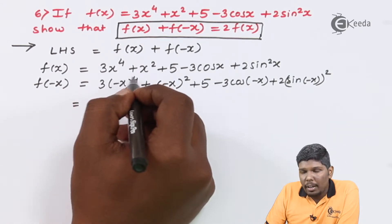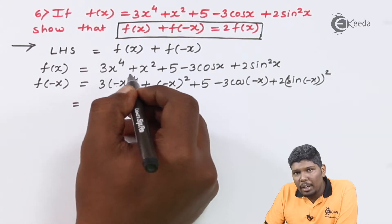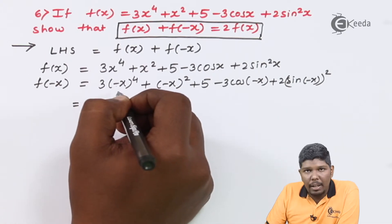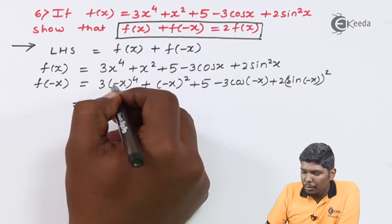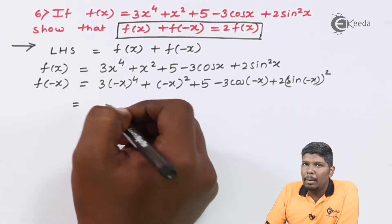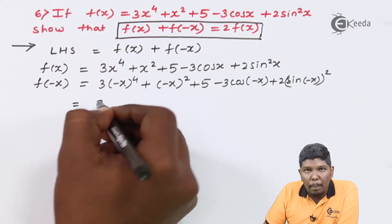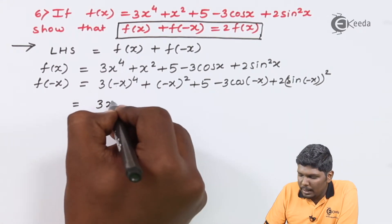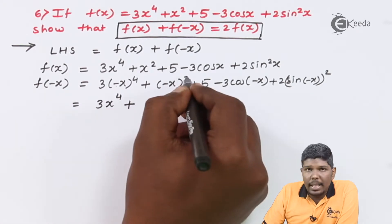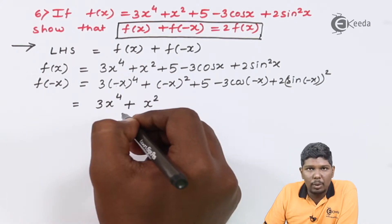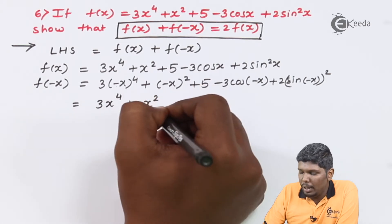Remember, friends: any term having odd power and a negative sign will be negative, but a negative term having even power will give you a positive answer. So here you have a negative term with even power 4, so (-x) raised to 4 is positive x raised to 4. Further, (-x) squared also gives positive x squared, because 2 is an even number.